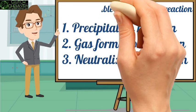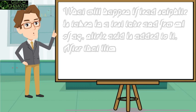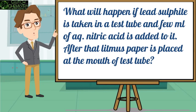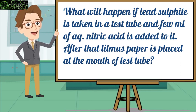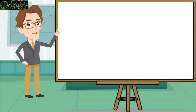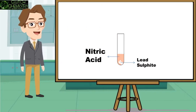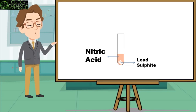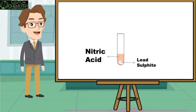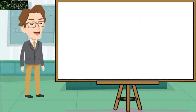Now a question: What will happen if lead sulfide is taken in a test tube and a few milliliters of aqueous nitric acid are added to it? After that, litmus paper is placed at the mouth of the test tube. Can you tell what happens when we put nitric acid into the test tube and then place litmus paper? Comment your answer.